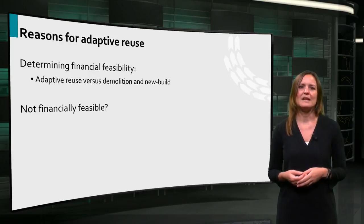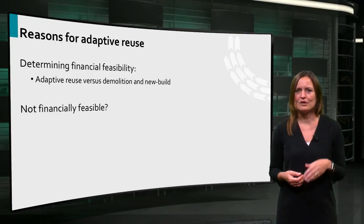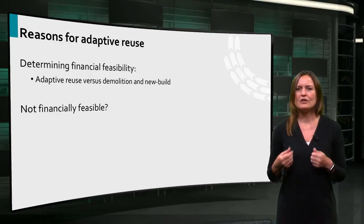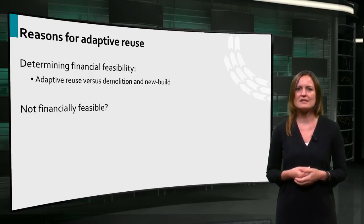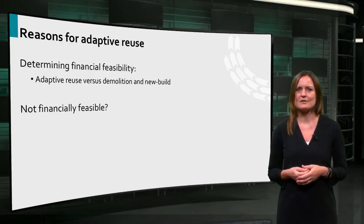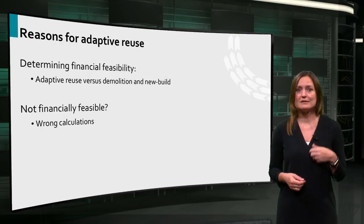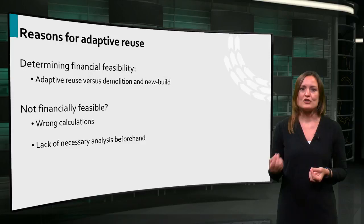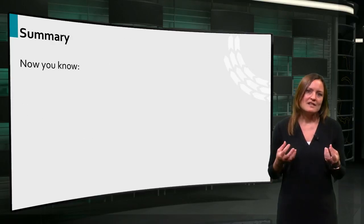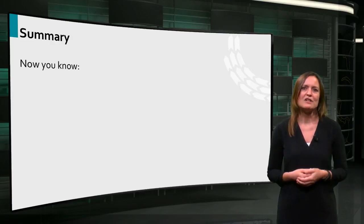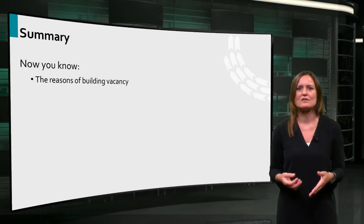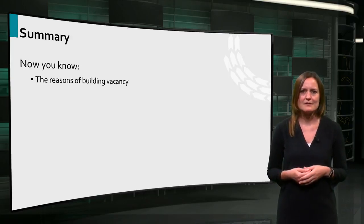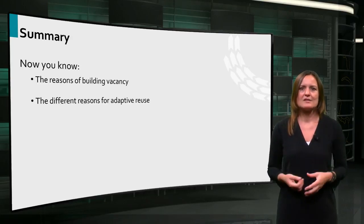However, adaptive reuse should be compared to demolition and new build, not only to new build. In some cases, lack of financial feasibility is a result of not calculating well, or not doing the necessary analysis before starting the project. So, with this session, you have now learned which drivers may cause building vacancy and the reasons for adaptive reuse. Thank you for watching.